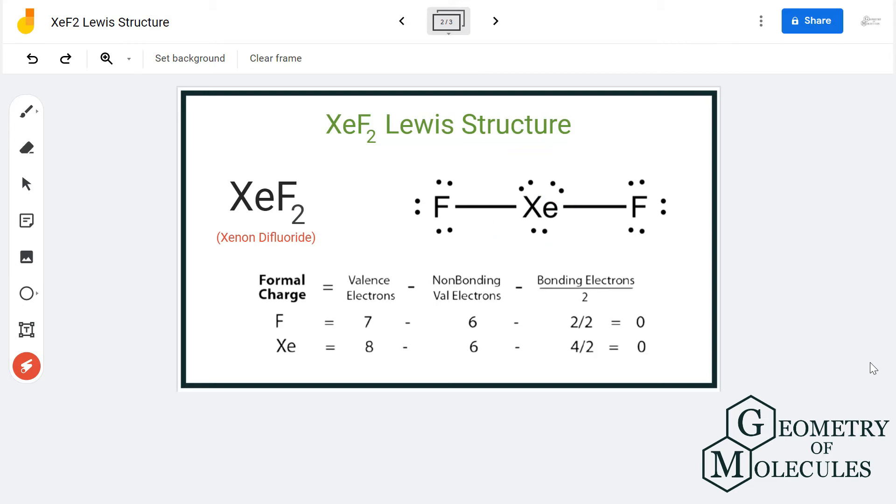To check if this structure is stable enough, we will calculate the formal charges for both xenon and fluorine atoms for this molecule. So here is a formula for calculating formal charges.